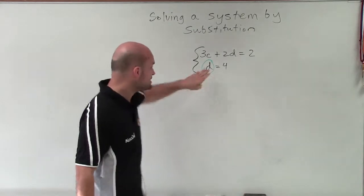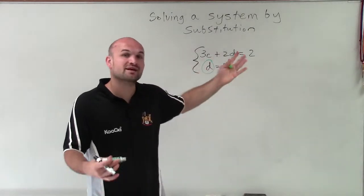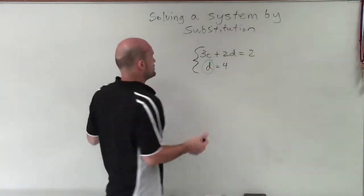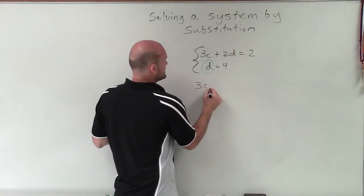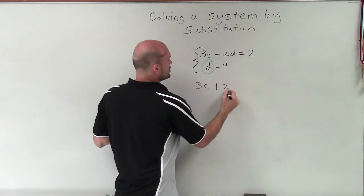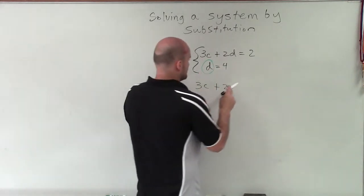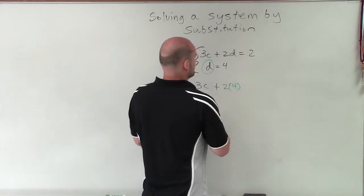So then what I'm going to do is, since I know the value of d equals 4, I'm going to substitute in that value for the variable into the other equation. So when doing that, I'll now write 3c plus 2, and instead of writing times d, I'm going to write d is equal to 4, equals 2.